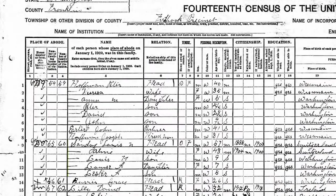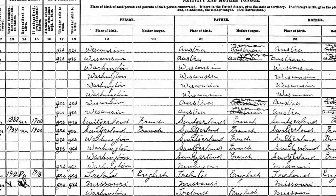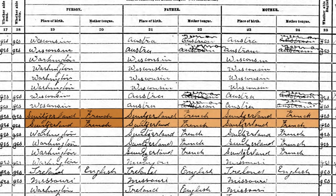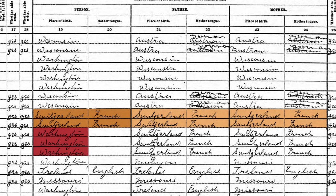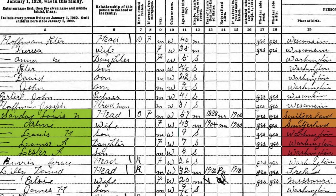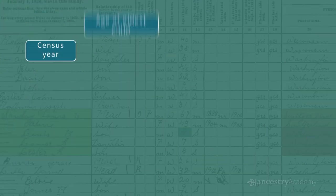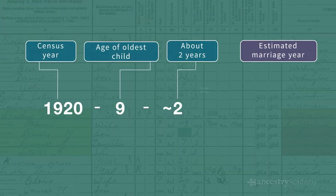Let me take you through the 1920 census with the family of Louis Sandoz, living in Fishhook, Washington in 1920. He and his wife are from Switzerland, where they spoke French, as did their parents. They have three children, all born in Washington, and the oldest child was born about 1911. If we were to hazard a guess, we could say Louis and his wife Aline were married in 1908 or 1909.